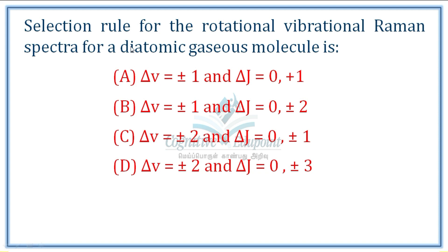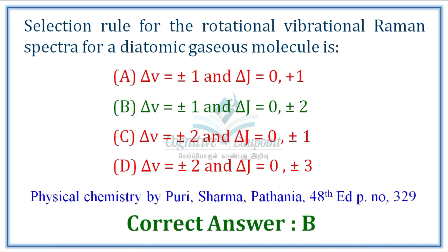Next question: The selection rule for rotational-vibrational Raman spectroscopy for diatomic gaseous molecules. For vibration, delta-v equals ±1. For rotation in Raman spectroscopy, delta-J should be 0 or ±2. This applies whether considering rotation, vibration, or both. The correct answer is option B.